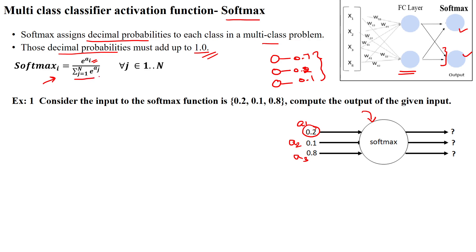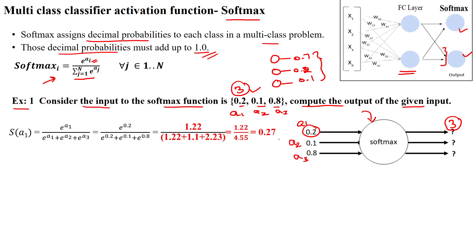The given problem statement: consider the input into the softmax function is 0.2, 0.1, and 0.8 — input 1, input 2, and input 3. We have to compute the output for the given inputs. Since we have three input values a1, a2, a3, we are going to get three outputs, making this a three-class classification problem.